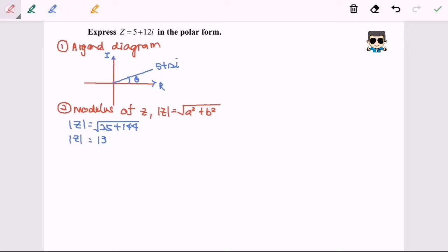So for the third step, we are going to look for the argument of z. The argument of z. So before that, the formula will be tangent theta is equal to y over x.